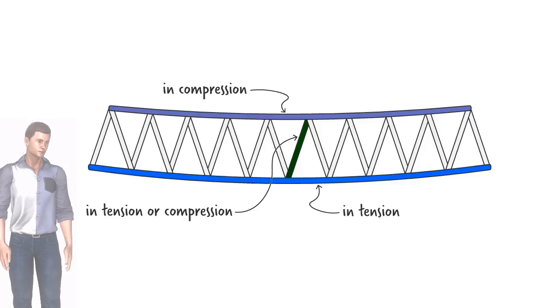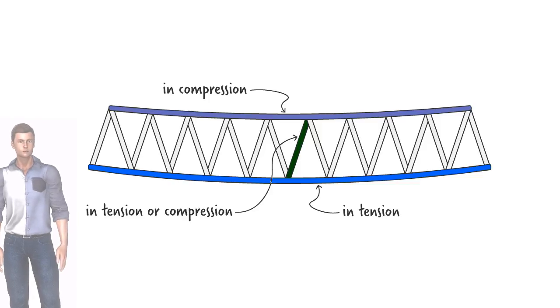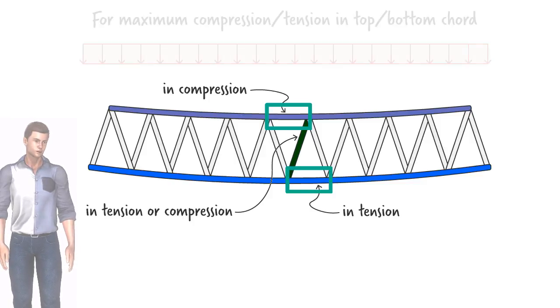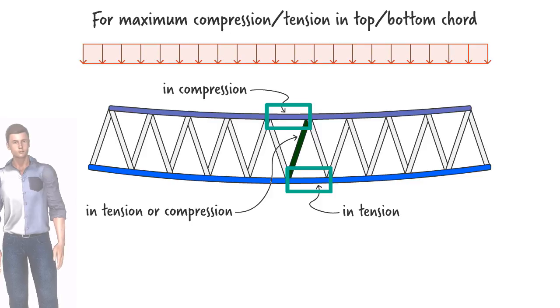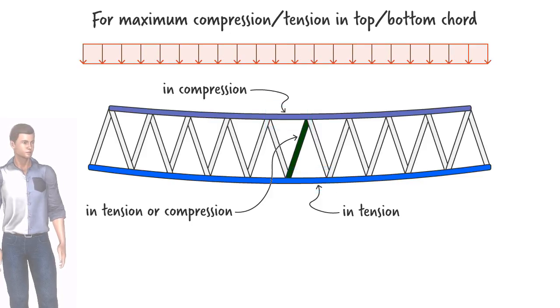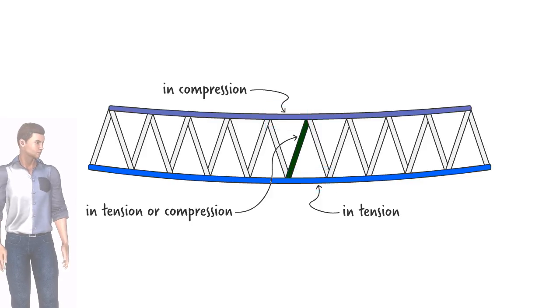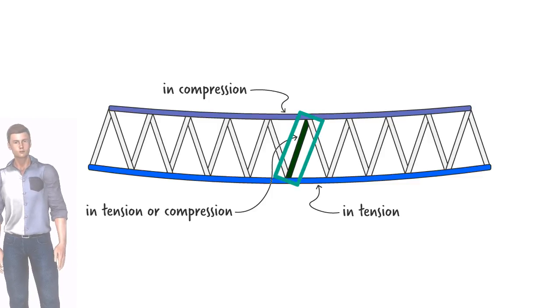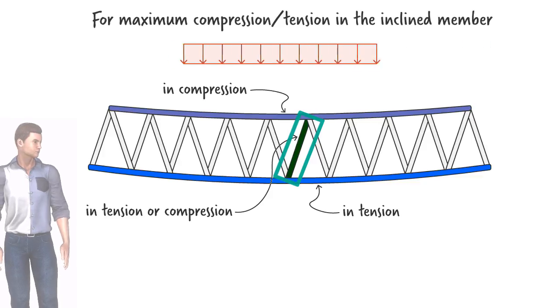As you are going to see in a minute, that means in order to determine the maximum compressive force in this member and maximum tension force in this member, the distributed load needs to span the entire length of the bridge, whereas the maximum tensile and compressive force in the inclined member develops only when the bridge is partially loaded, when the load is either toward the right end or the left end of the bridge.